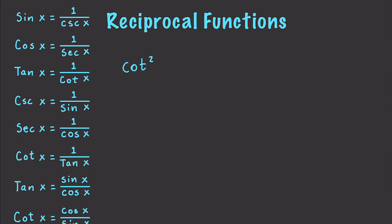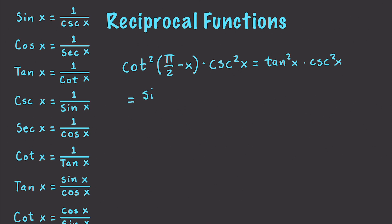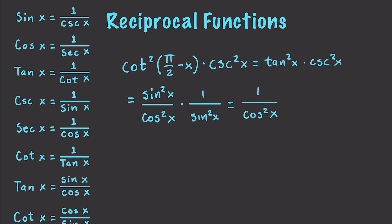One more example: cotangent squared of pi over 2 minus x times cosecant squared x. This equals tangent squared x times cosecant squared x, which equals sine squared x over cosine squared x times 1 over sine squared x. These simplify down to 1 over cosine squared x.